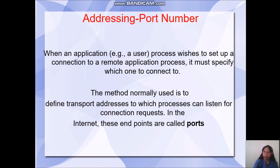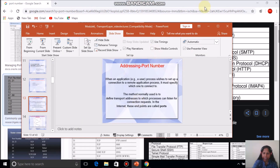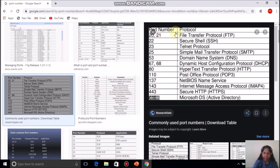When it comes to addressing of the transport layer, it is the port number. The port number is actually the endpoint of any connection. For any application — for example, an email application uses the application layer protocol SMTP — SMTP has a port number. So the address of the transport layer is the port number, and it varies from application to application. Every application layer protocol has a corresponding port number and it is the endpoint.